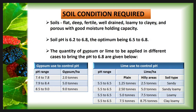The ideal range of soil pH is 6.2 to 6.8, with the optimum pH being 6.5 to 6.8. To improve soil pH, we use gypsum or lime. If the desired pH ranges between 7.4 to 7.8, we use 2 tons of gypsum per hectare. If the desired pH ranges between 5.5 to 6.5 in a plain area with sandy soil, we use 1.25 tons of lime per hectare; in a hilly area with sandy soil, 2.5 tons of lime per hectare, and so on.